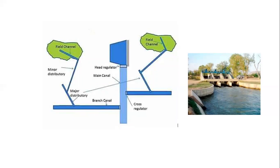Before going to the actual classification, we'll try to understand the canal network. From a reservoir, waterways lead to the main channel, and flow is controlled using head regulators — structures with a regular arrangement of gates. From the main canal, water moves through the branch canal, then to the major distributory and minor distributory, and finally water is led to the field through the field channel.